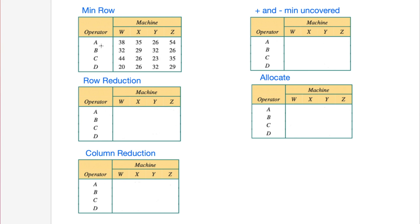We want to identify the minimum number in each row. For person A, this works out which machine they're fastest at - if these are the times they take to complete tasks using those machines. Person A's minimum is at machine Y; person B is best at machine Z; person C is also best at machine Y, so we've got a tie - and this is where the Hungarian algorithm comes in handy. Person D is best at machine W. So we could probably allocate machine W to person D and machine Z to person B, but the problem is how we allocate machine Y and who gets machine X, since no one seems to be best at that machine.